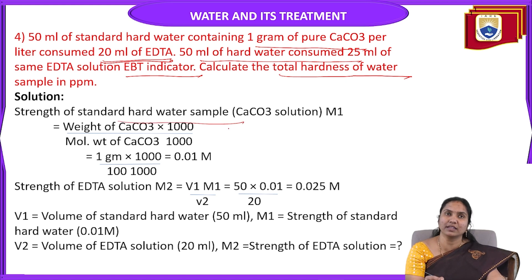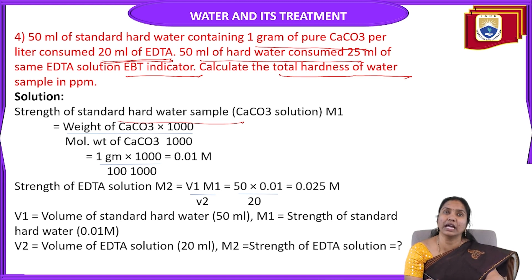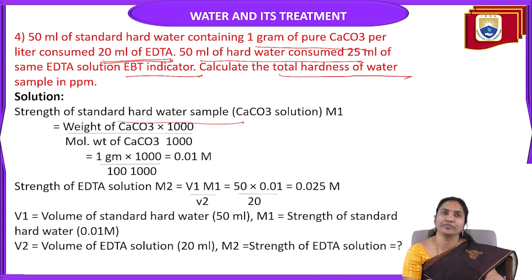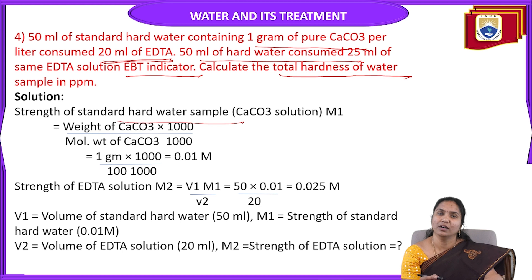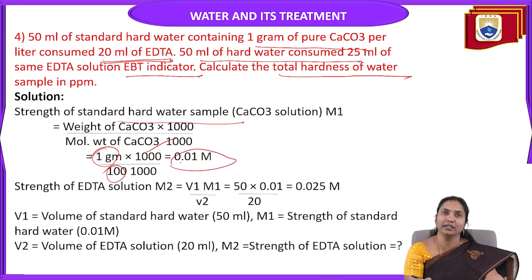First, find the strength of the standard hard water sample — that means the molarity of the calcium carbonate solution. Strength = weight of CaCO3 / (molecular weight of CaCO3 × 1000) × 1000. Weight of CaCO3 = 1 g, molecular weight of CaCO3 = 100, total makeup solution = 1000 ml. So molarity = 1/100 × 1000/1000 = 0.01 M. The molarity of the standard hard water sample is 0.01 M.